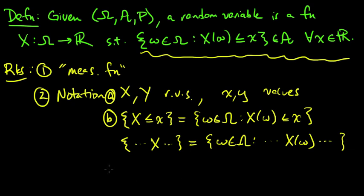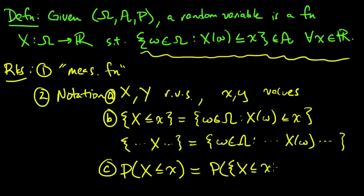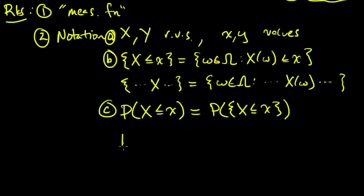And a further shorthand, which is very often used and sometimes can be quite confusing if you're new to probability, is the following. So we write P of, in this case for example, we would write P of X, the random variable less than little x, to mean the probability of the set, this set here, probability of the set of little omegas for which this random variable is less or equal to little x. Or more generally, I could write P of some condition to mean the probability of the set of omegas for which that condition holds.